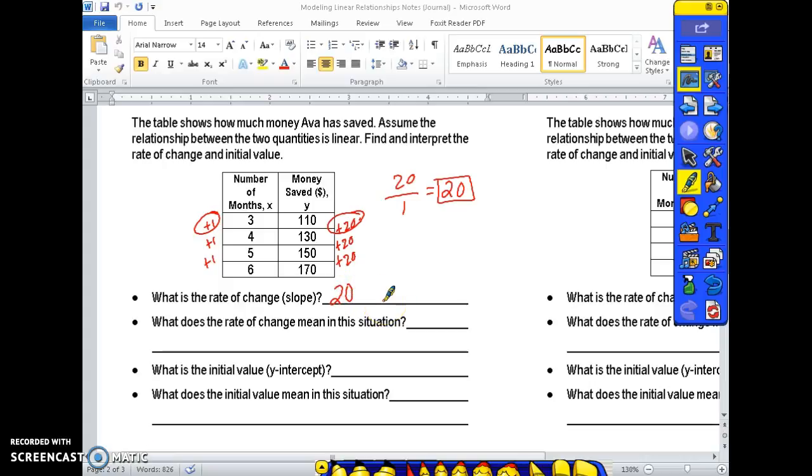Now what does that mean for this situation? The table shows how much money Ava has saved. So each month she is saving $20. So the rate of change means that Ava saves $20 every month.